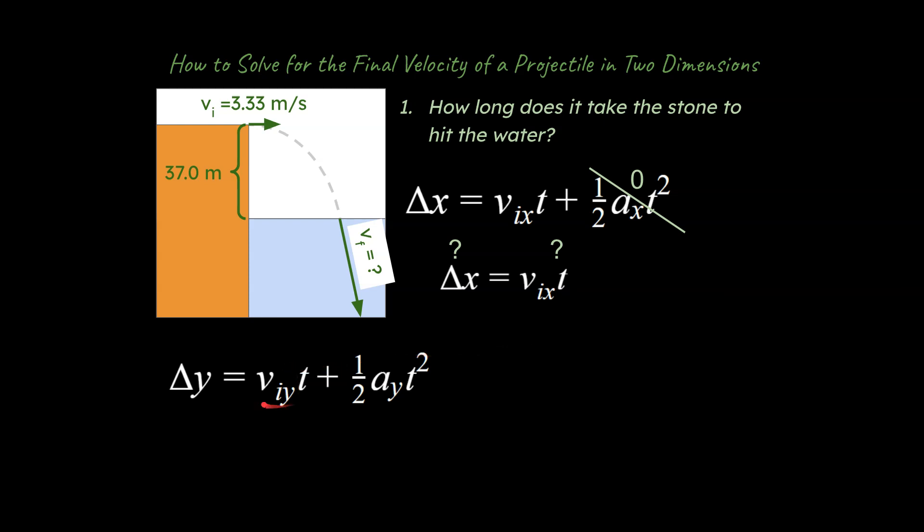All right, well hopefully you've been able to come up with the idea that your v initial in the y is going to be zero here, because this stone is kicked completely horizontally. It has no component in the y-axis over here, or over here, like upwards or downwards, that kind of thing. So this is zero, and that means that whole term drops out, and we can simplify the equation here.